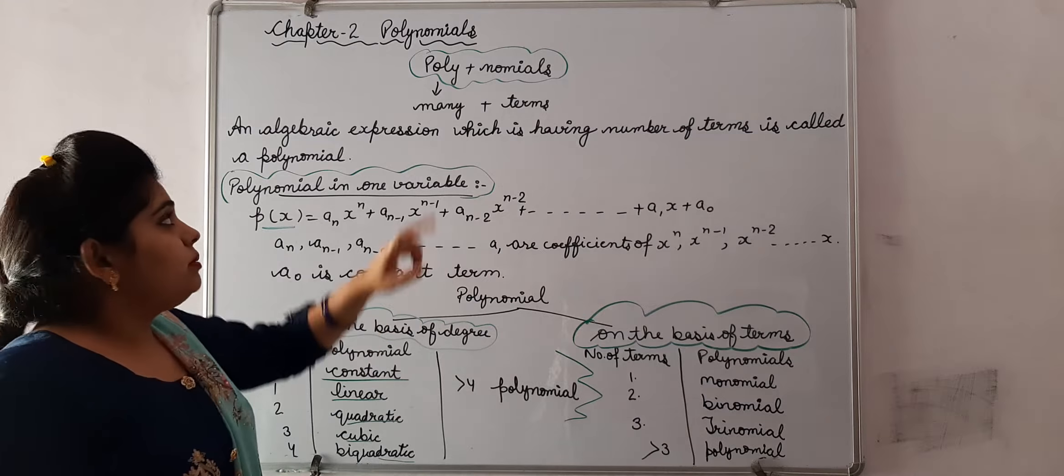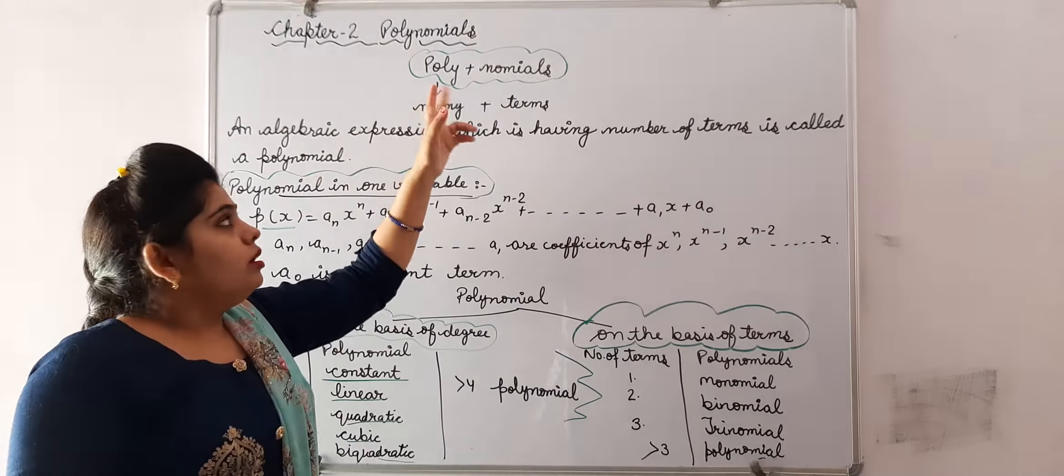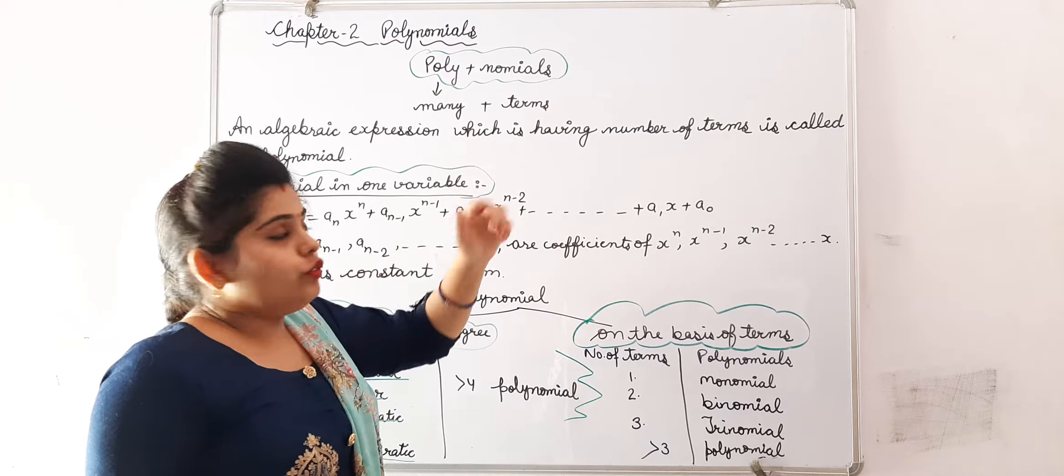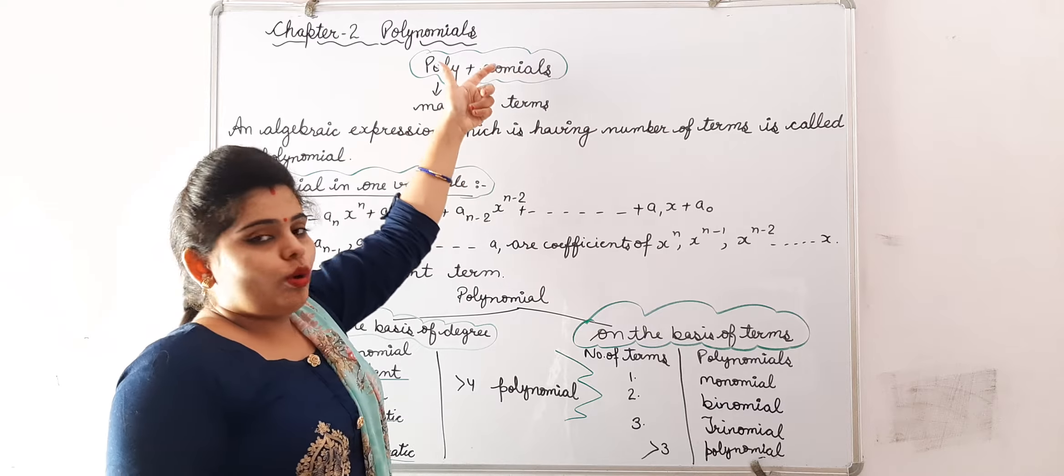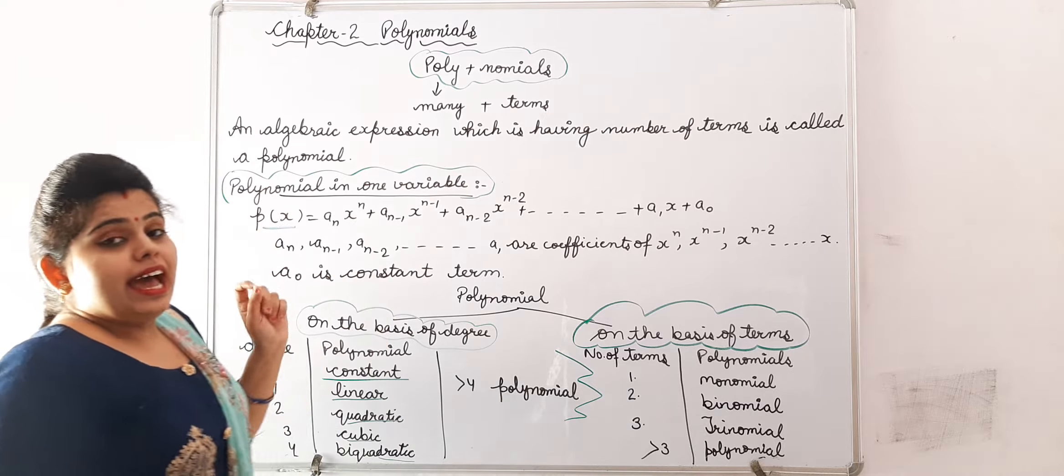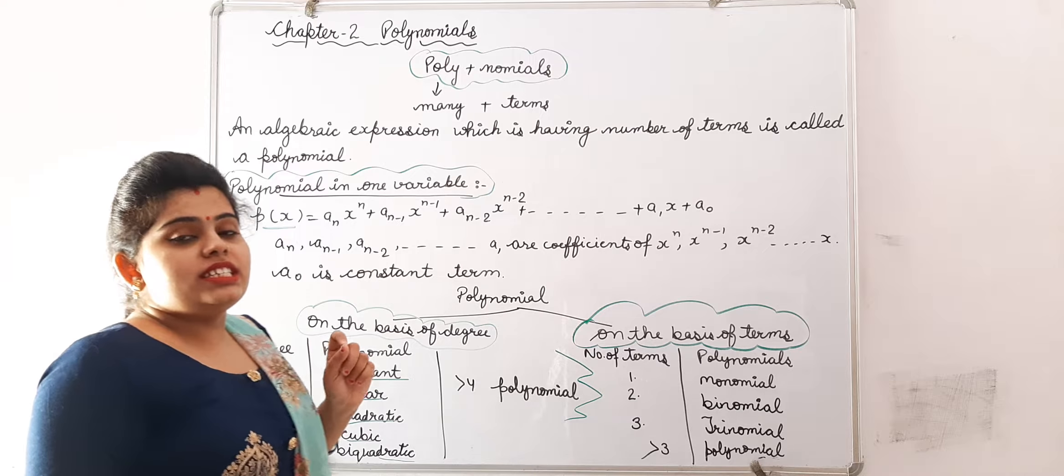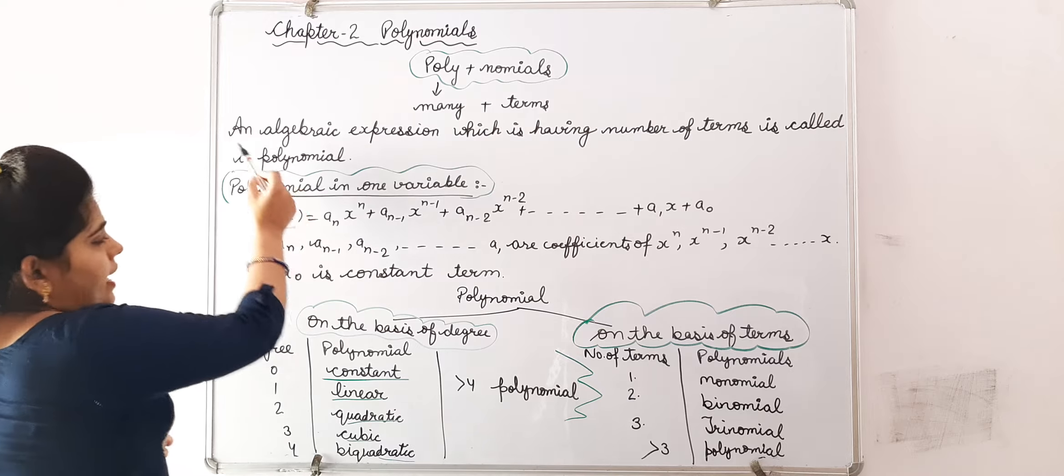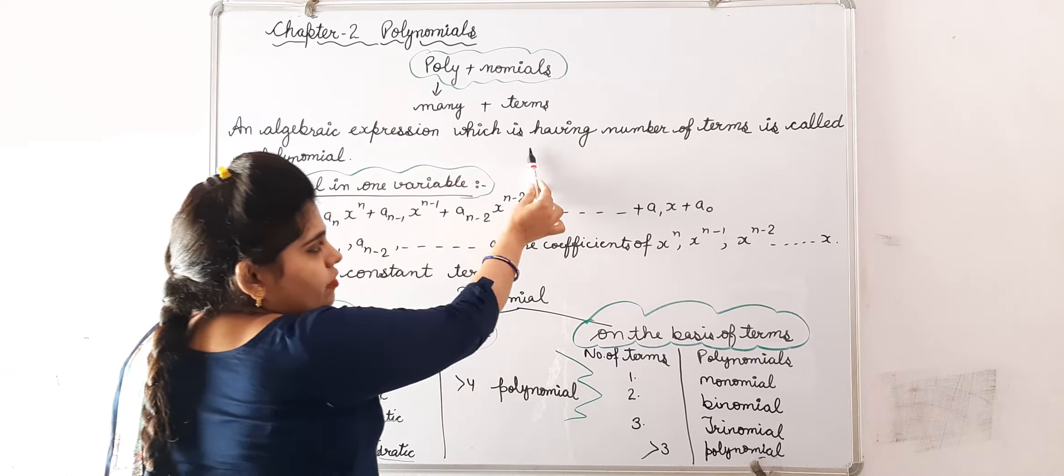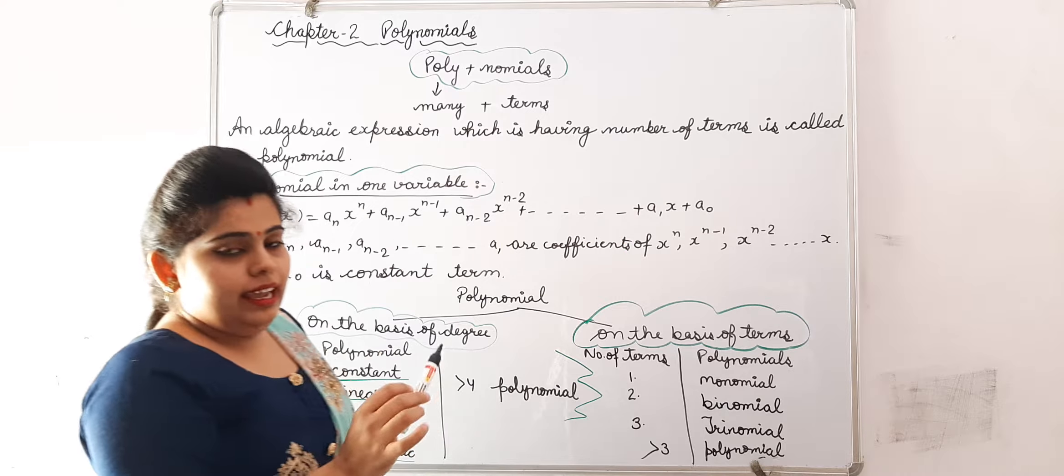Our second chapter is polynomials. Polynomials is a combination of two words, poly plus nomials. Poly means many, nomials means terms. An algebraic expression which is having number of terms is called polynomial.